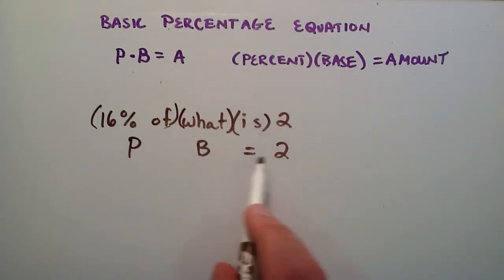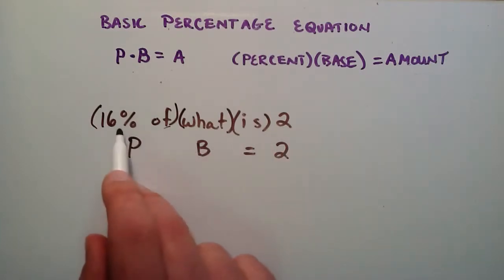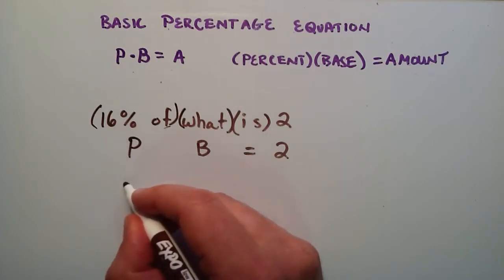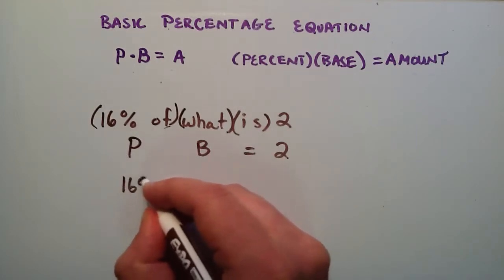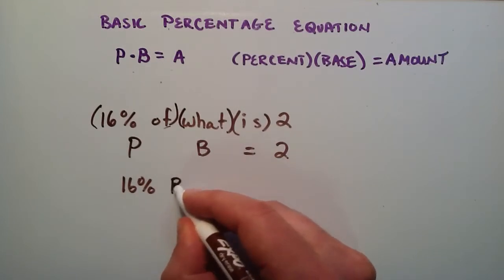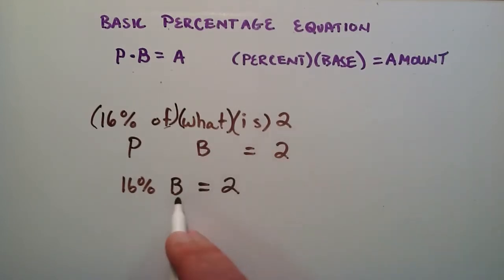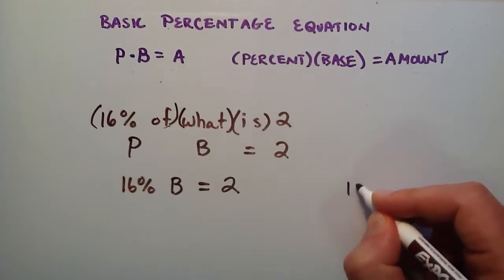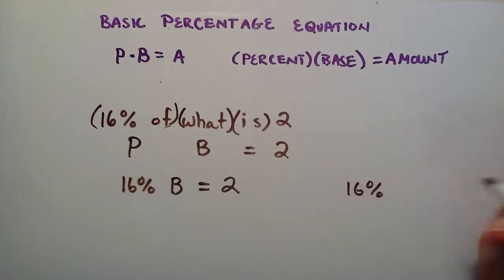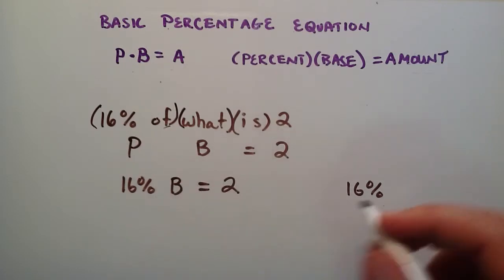So P times B equals A. Really, this time we're solving for B, our base. For this question, we know what our P is. It's 16%, so 16% times our base equals 2. What does our base have to be to make this statement true? Well, in order to work with the math here, basically...